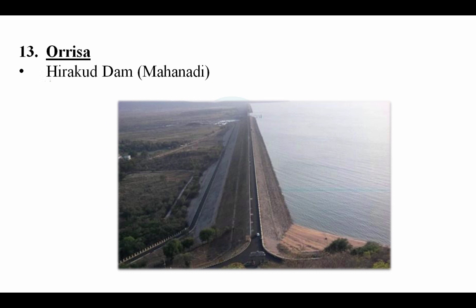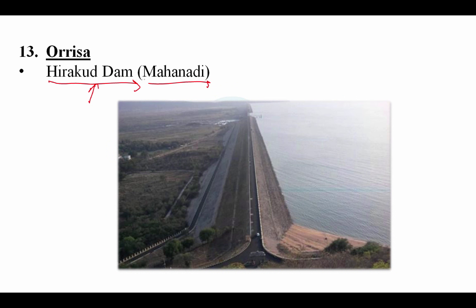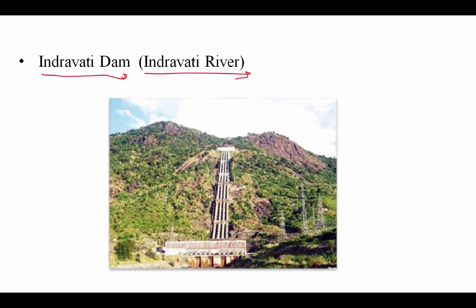From Odisha, two important dams. First is Hirakud Dam on the Mahanadi river — a very famous dam of India, located in Odisha. Second is Indravati Dam on the Indravati river. So from Odisha: Hirakud Dam on Mahanadi, and Indravati Dam.